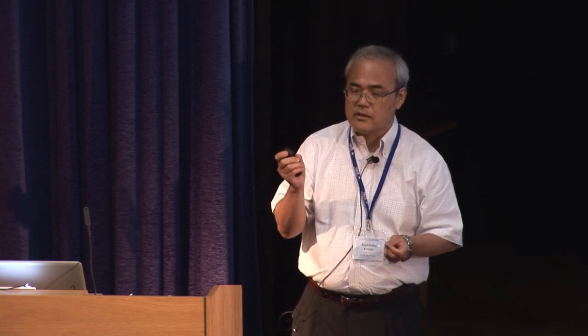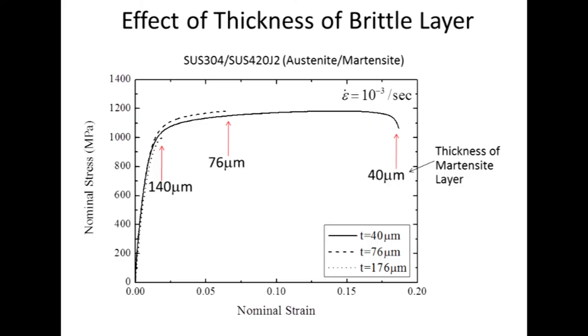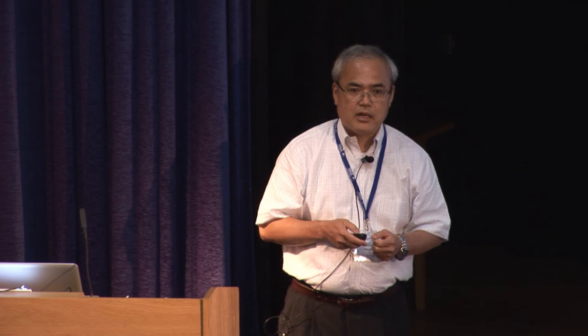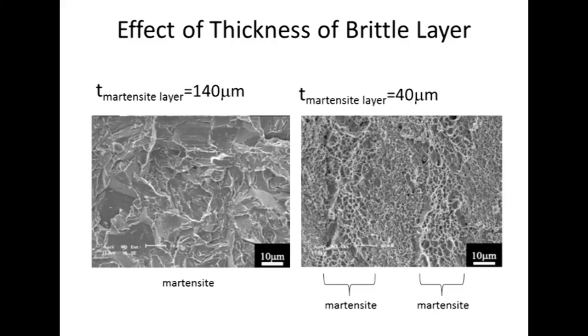Certainly, decreasing the layer thickness increases the elongation of as-quenched martensite. By decreasing the thickness of martensite layers, this Type 420 high-carbon martensitic stainless steel can be elongated up to nearly 20%. Without multi-layer structure, we cannot elongate as-quenched martensite in this way. Also, the fracture surface changes from brittle to ductile dimpling as the thickness of the martensite layer is decreased.